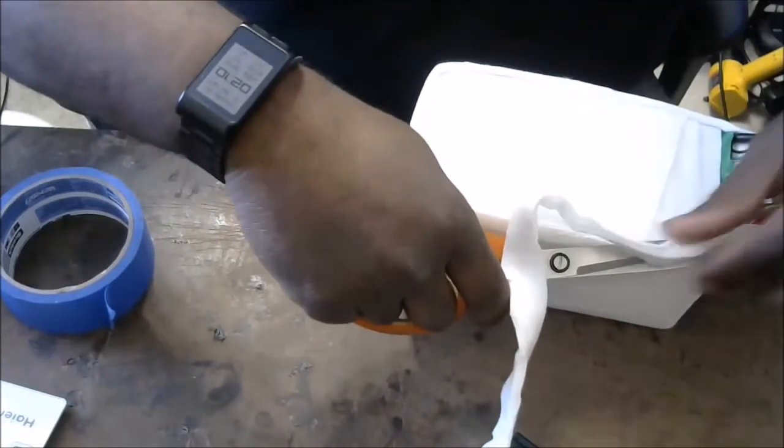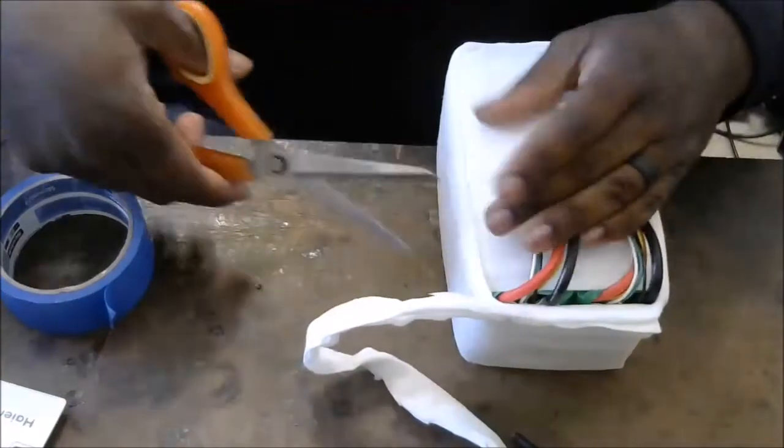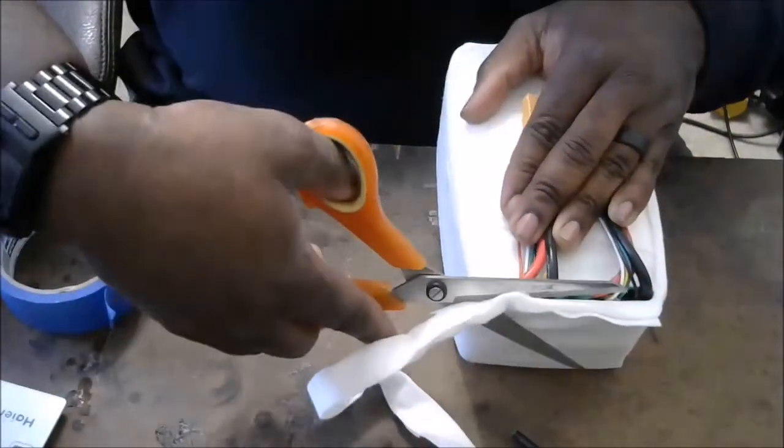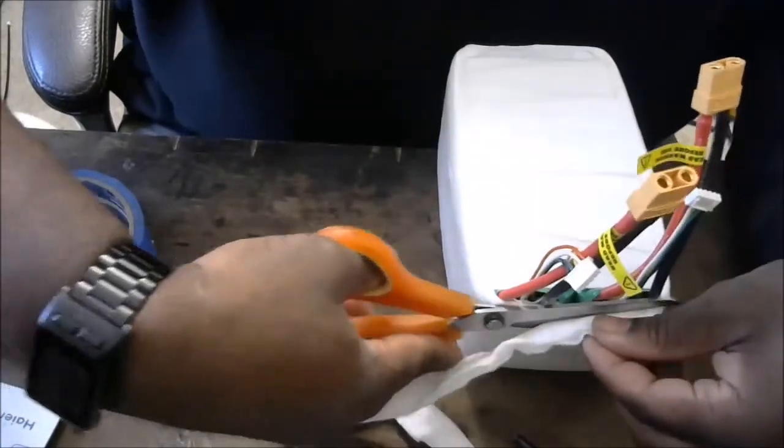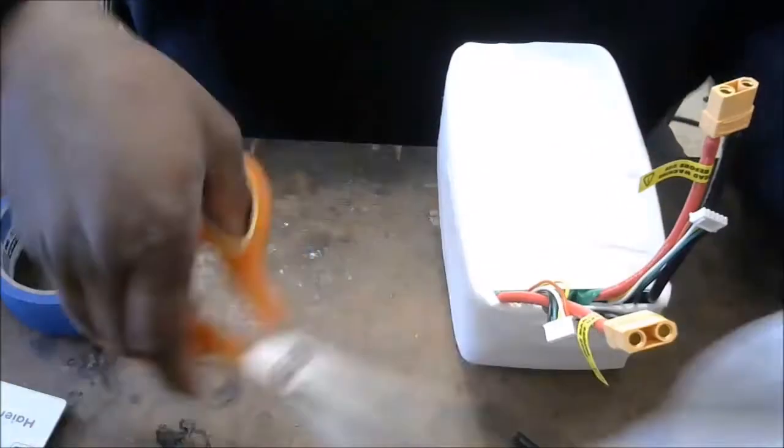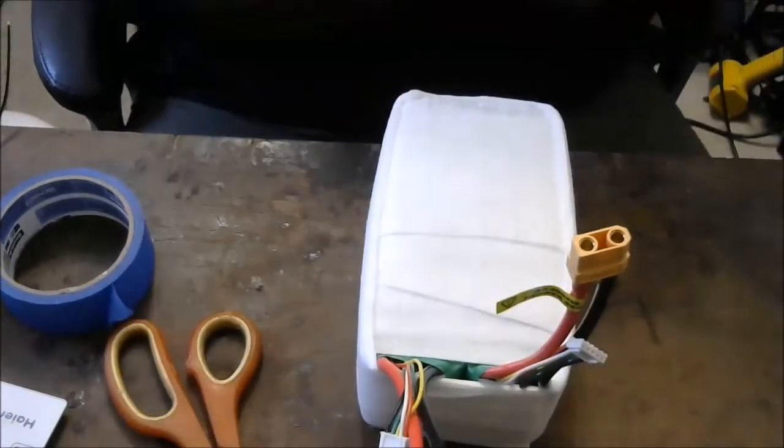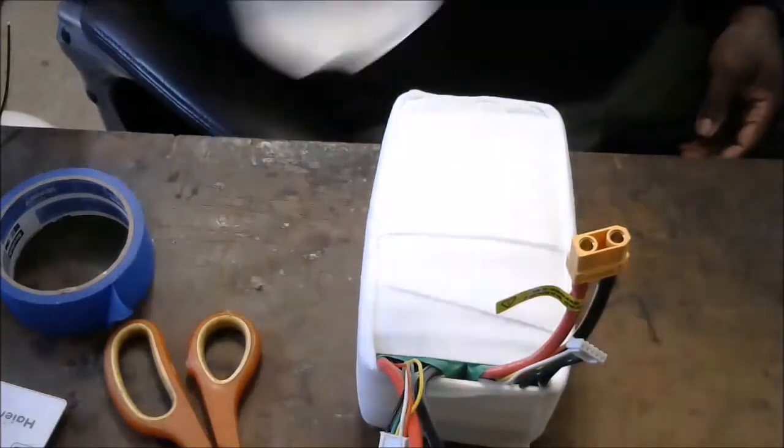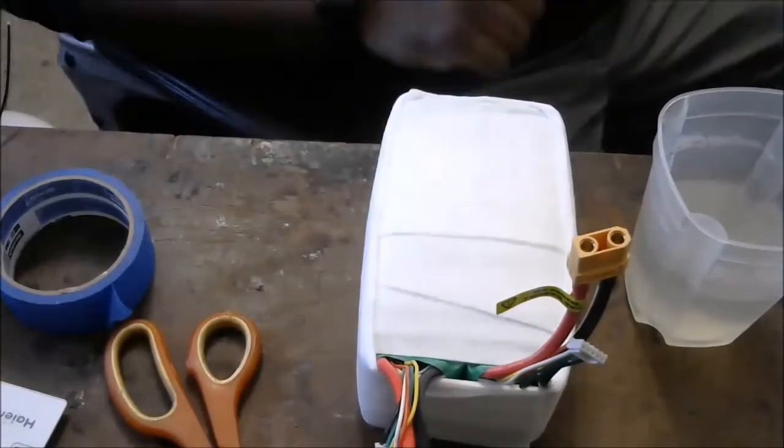I'm going to fold these wires out of the way a little bit. Now we have a pack that's wrapped up, ready for the casting material. For the casting material, you're going to need some water. I'm going to use two rolls for this.